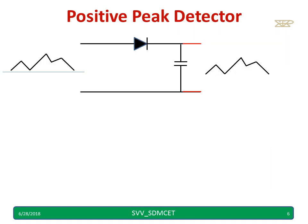Now, let us consider how this works. When the input is increasing, the output voltage across the capacitor also increases, because the diode becomes forward biased and conducts. When the input starts reducing, the capacitor voltage is now higher than the input, so the diode becomes reverse biased and does not conduct. At that point, the voltage across the capacitor remains the same.